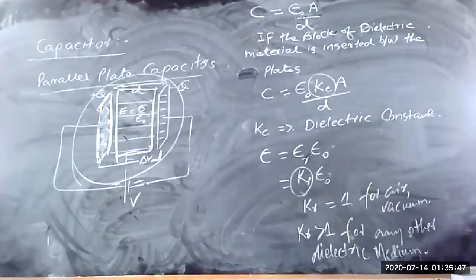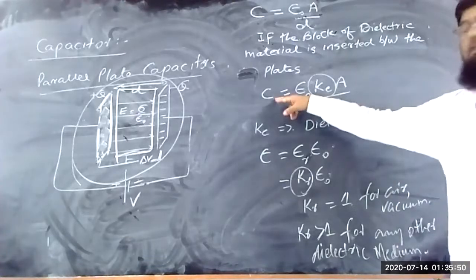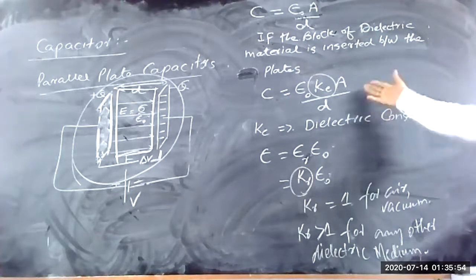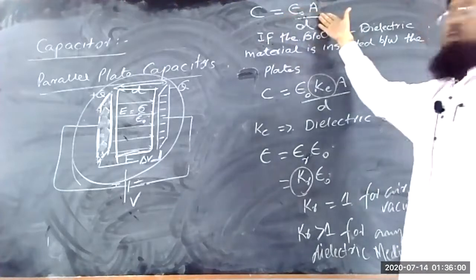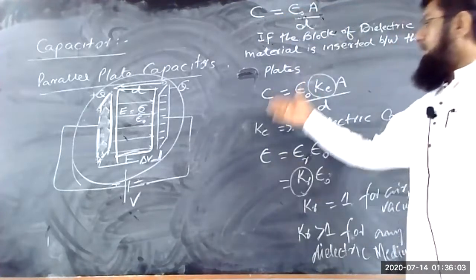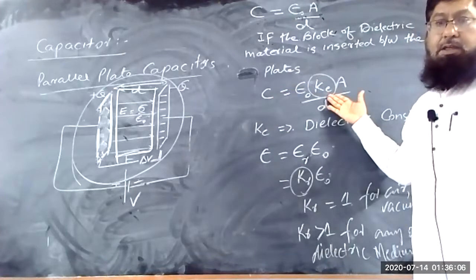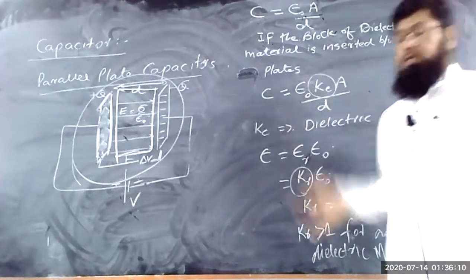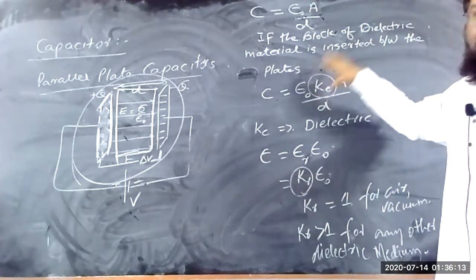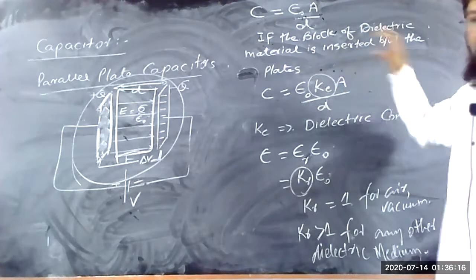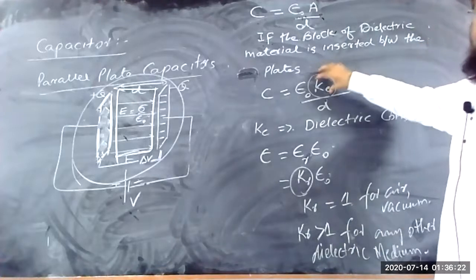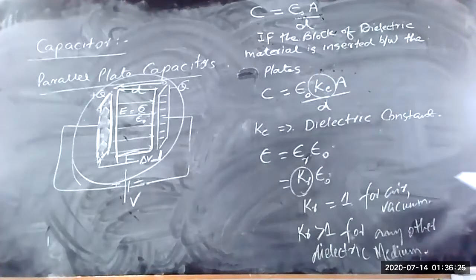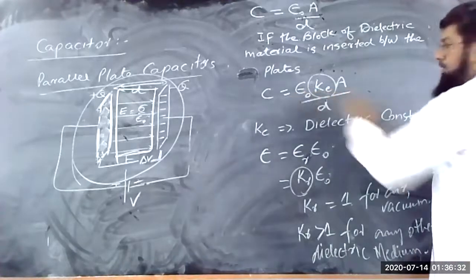This is the capacitance of the parallel plate capacitor. If the medium between the plates is air, the capacitance is C = ε₀A/D. If the medium is a dielectric material, the capacitance increases. The phenomenon of how it increases is called polarization of the material, which we will discuss later. Here kE is the dielectric constant.